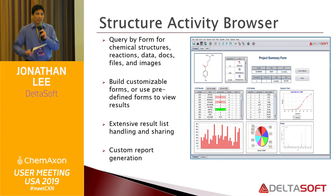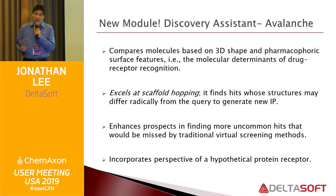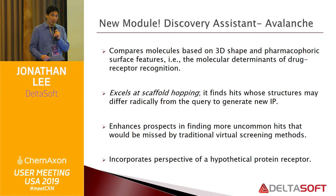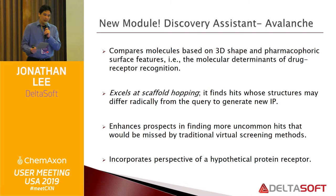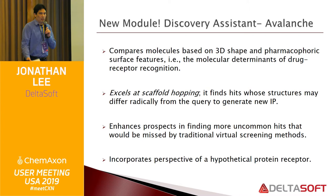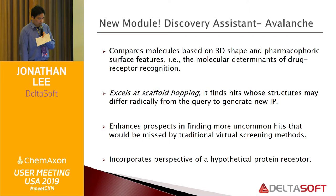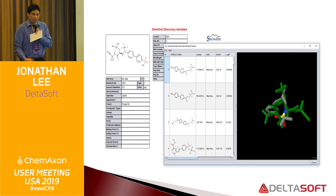There's a new module that came out this year called Discovery Assistant, which integrates with the Avalanche software from Snowden. That software is a screening addition that allows you to compare molecules based on 3D shape or pharmacophore surface features — hydrogen bond donor/receptor, areas of charge, and so on. It excels at scaffold hopping and goes beyond basic virtual screening features. You can see a form in the back that pops out to an Avalanche result viewer where you can see results overlaid in 3D, and you can also have this within the form if you don't want it to pop out.